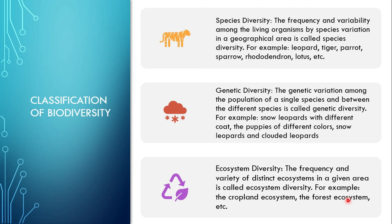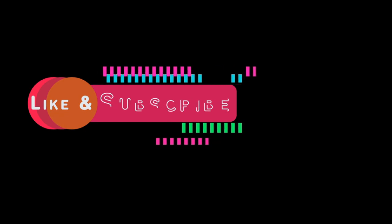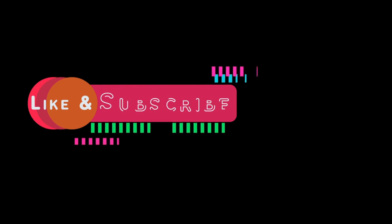In Nepal, we have every type of ecosystem except two: marine ecosystem (ocean ecosystem) and desert ecosystem. We don't have these two types of ecosystem but have all others. This is a very important question frequently asked in exams for one mark: which ecosystems are not found in Nepal? Please be careful about this question and remember it well.